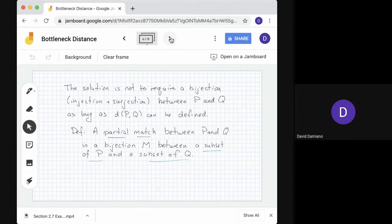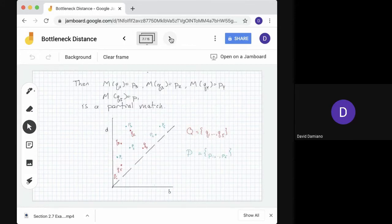So here's an example of a pairing between the two persistence diagrams that we were working with. We have P and Q. Let's match Q2 and P3, Q3 and P2, Q4 and P4. And finally, Q5 and P1 the way we had before. But we leave P5 and Q1 unpaired.